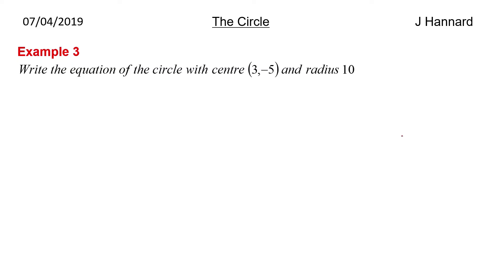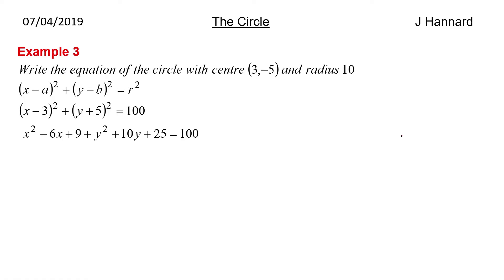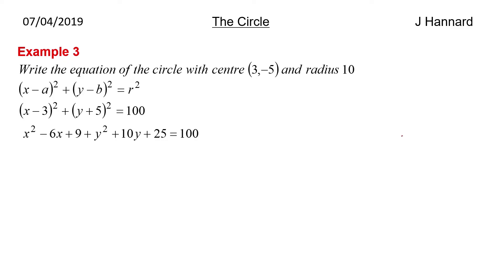Example 3: write the equation of a circle with centre (3, minus 5) and radius 10. We're working in reverse this time. Our A is 3, our B is minus 5 and our radius is 10. Plugging in the numbers: (X minus 3) squared plus (Y plus 5) squared — because minus minus 5 is plus 5 — and R squared is 100 because 10 squared is 100. Going a little further and expanding the brackets: X squared minus 6X plus 9 plus Y squared plus 10Y plus 25, which simplifies to X squared plus Y squared minus 6X plus 10Y equals 66.